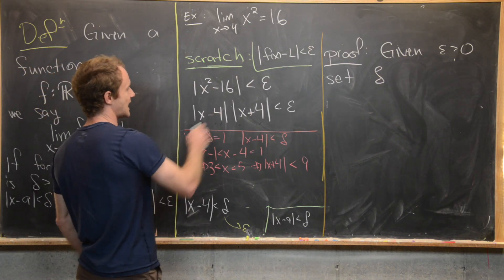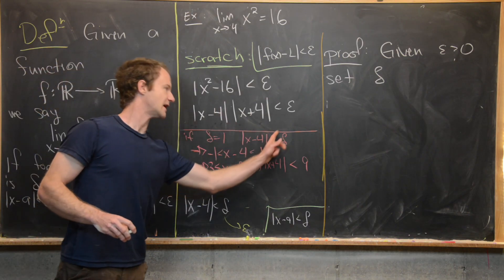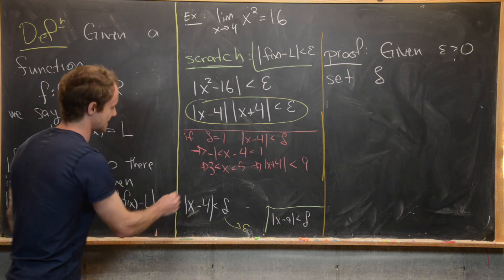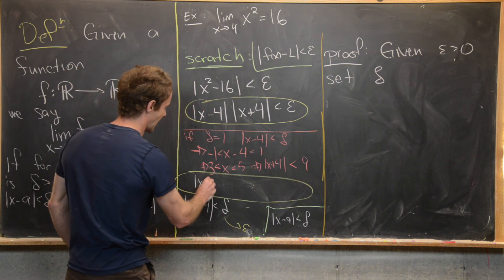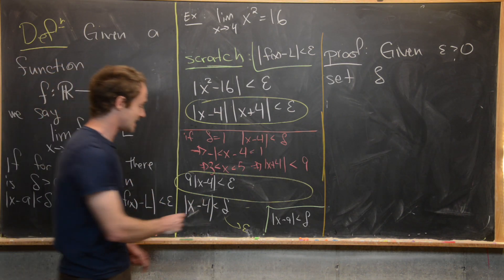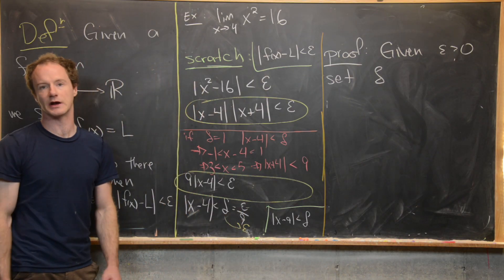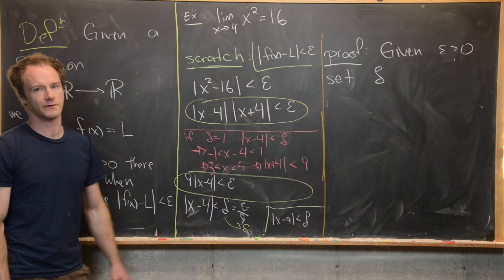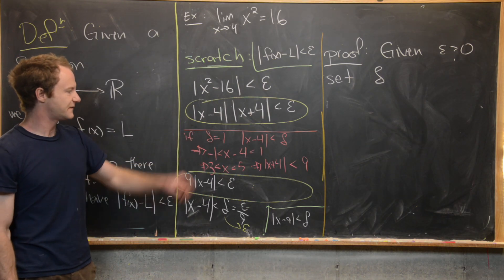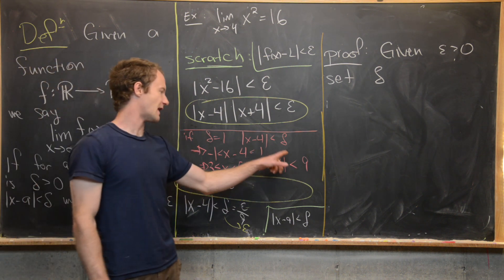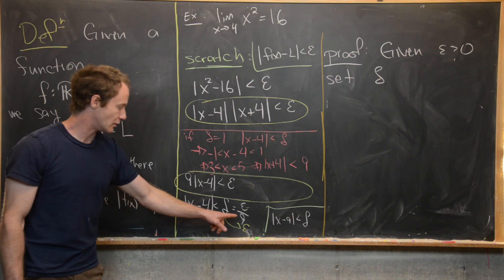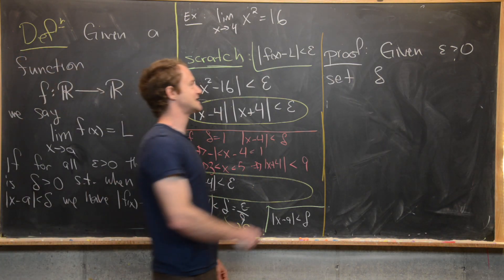Replacing |x + 4| with 9 in the inequality gives |x − 4| · 9 < epsilon, so |x − 4| < epsilon/9. This suggests delta should be epsilon/9, but only when delta ≤ 1. Therefore, we take delta = min(epsilon/9, 1) to ensure both conditions are satisfied simultaneously.